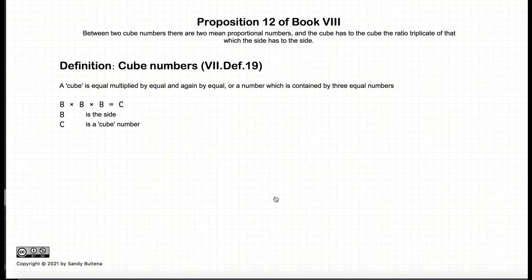Before we begin, we need to clarify some definitions. So a cubed number, which comes from definition 19, Book 7, is what you would expect it to be. If b is the side of a number and you multiply b times b times b equal to c, c is a cubed.